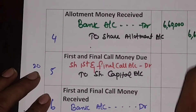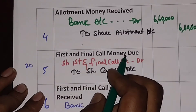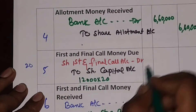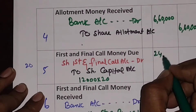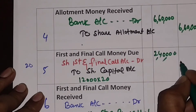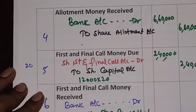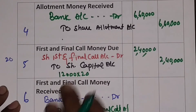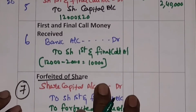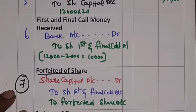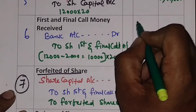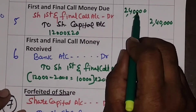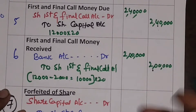Coming to first and final call money due: on 12,000 shares at Rs. 20 each, 12,000 into 20 gives Rs. 2,40,000. But the amount received is not for all 12,000 shares — they did not receive money for 2,000 shares. So money was received for 10,000 shares only. 10,000 into 20 gives Rs. 2,00,000. Due is Rs. 2,40,000 but received is Rs. 2,00,000.